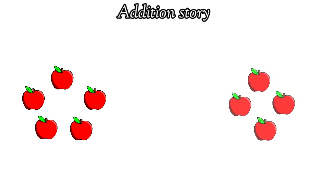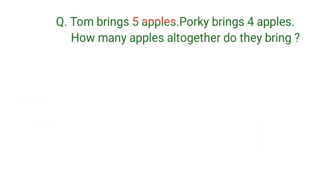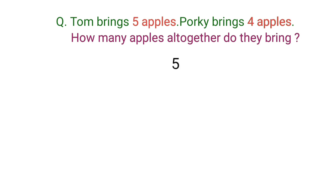Tom brings five apples. Porky brings four apples. How many apples altogether did they bring? First we read the story: Tom brings five apples and Porky brings four apples. We have to find how many apples altogether. 'All together' means we do addition. Five apples plus four apples equals nine apples. Therefore altogether they bring nine apples.